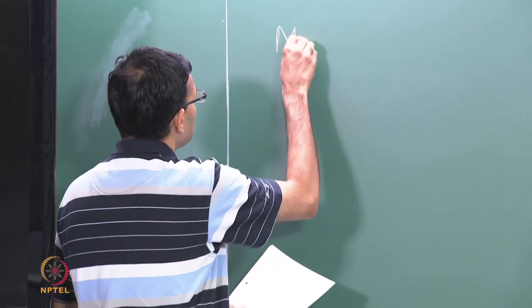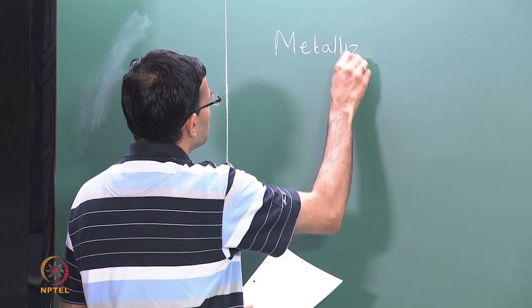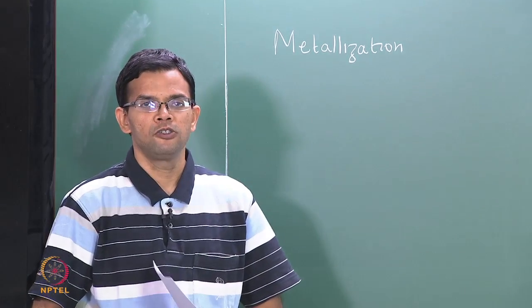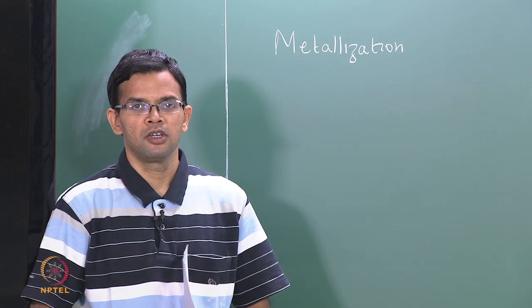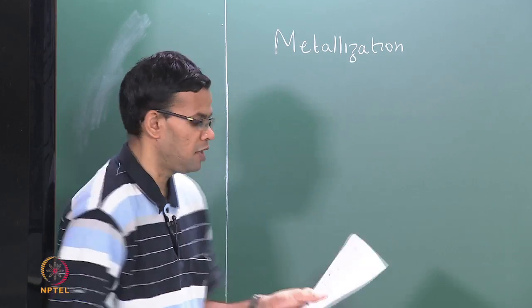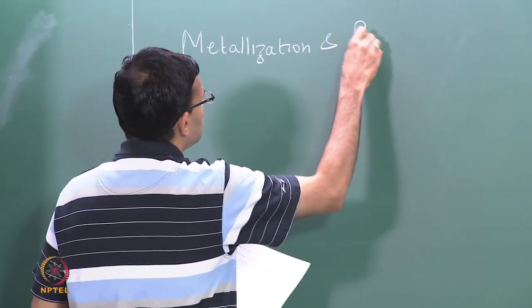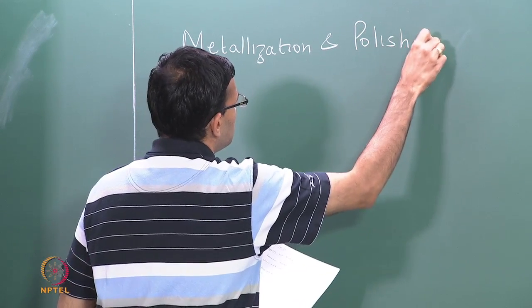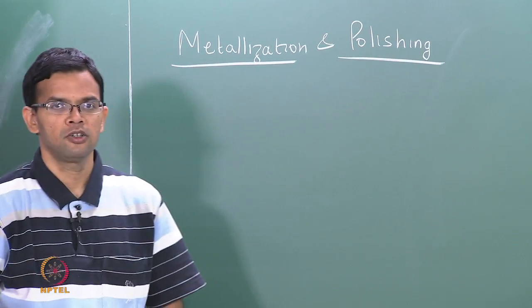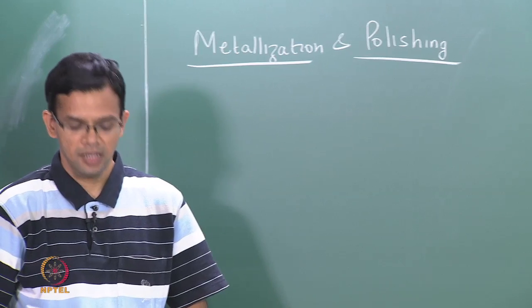Today we are going to continue to look at the growth process. We are going to look at the formation of metal layers — this process is called metallization. Along with metallization, we will also look at polishing, where we remove excess material in order to give a smooth finish and remove surface roughness. So today we are going to focus on two techniques: metallization and polishing.